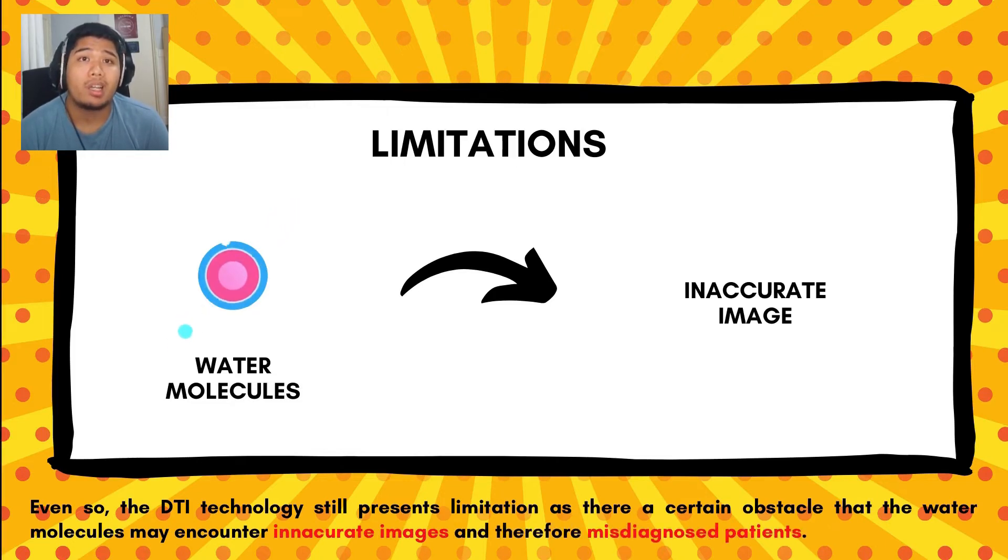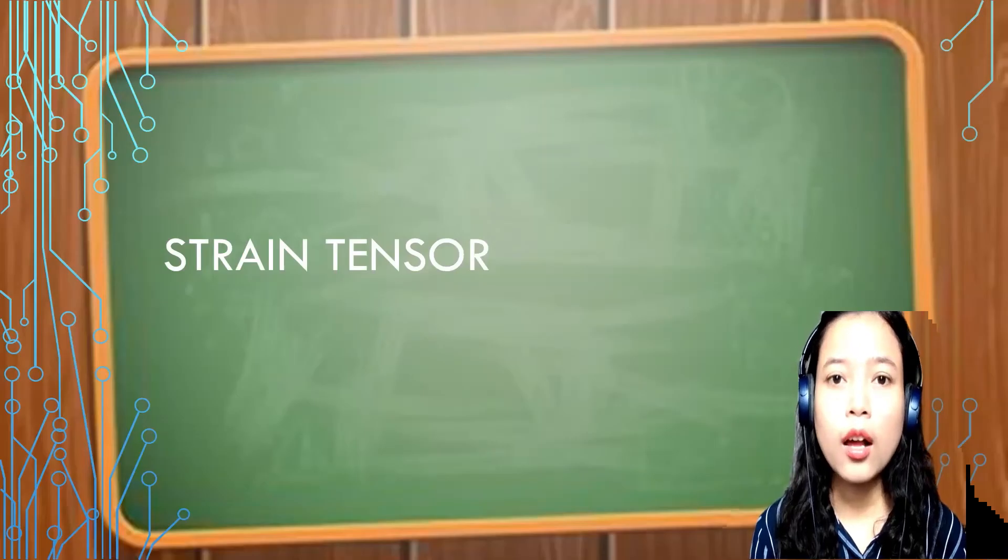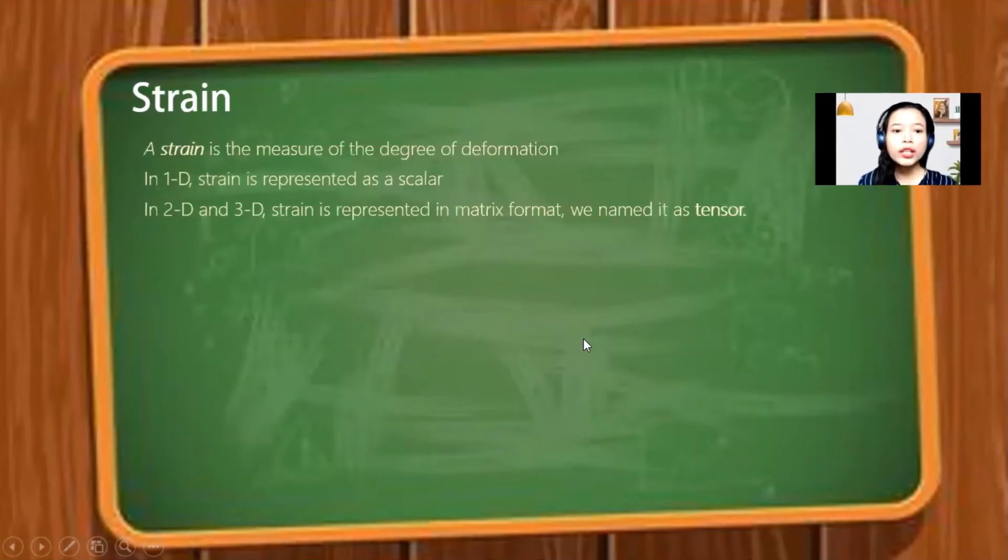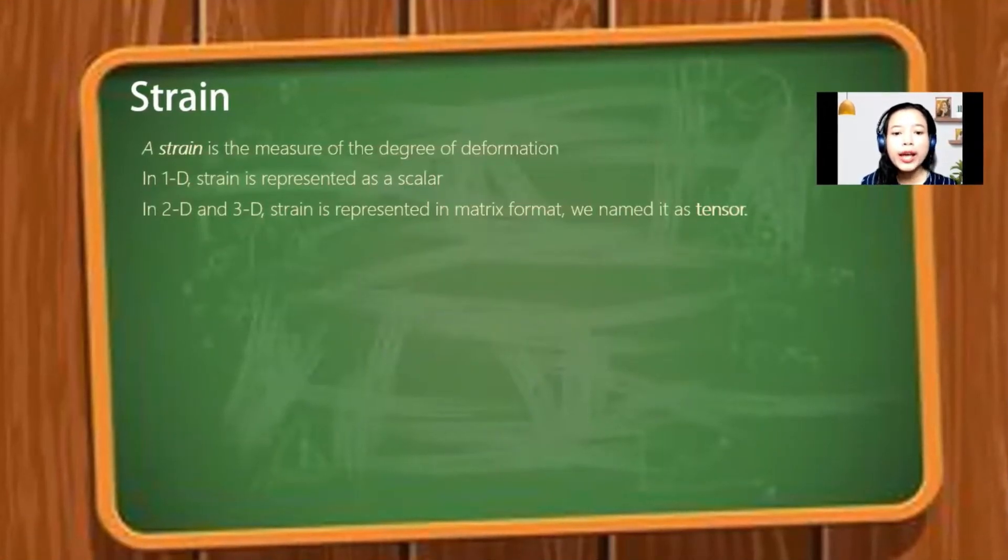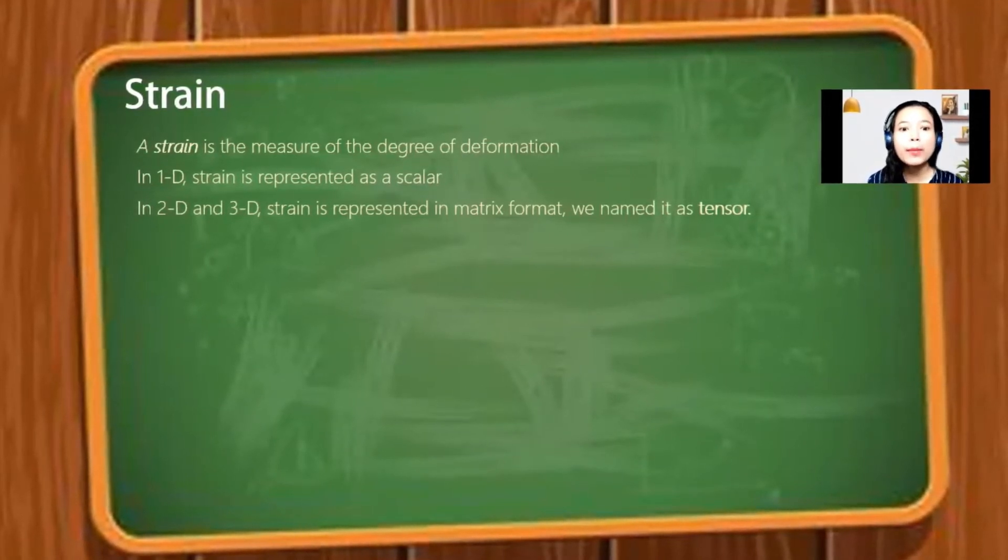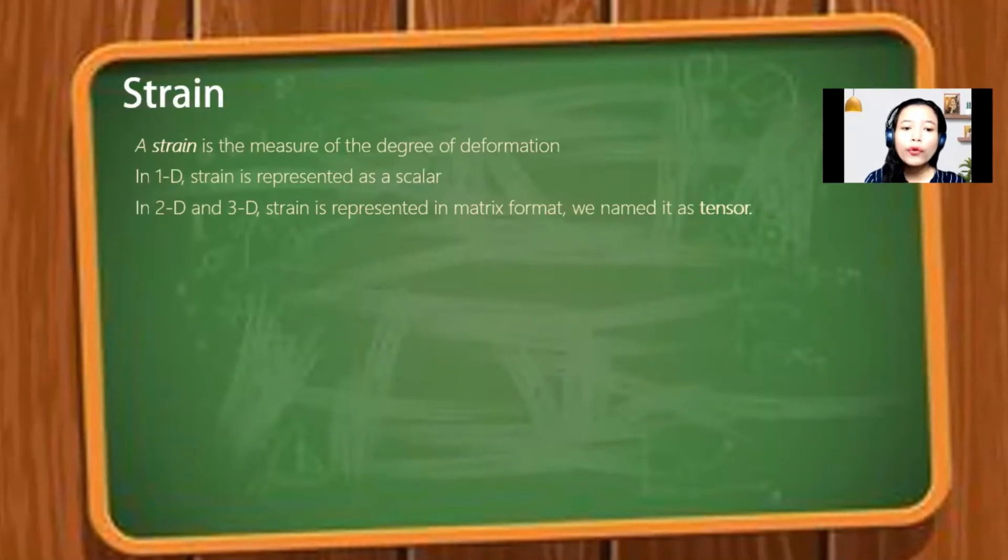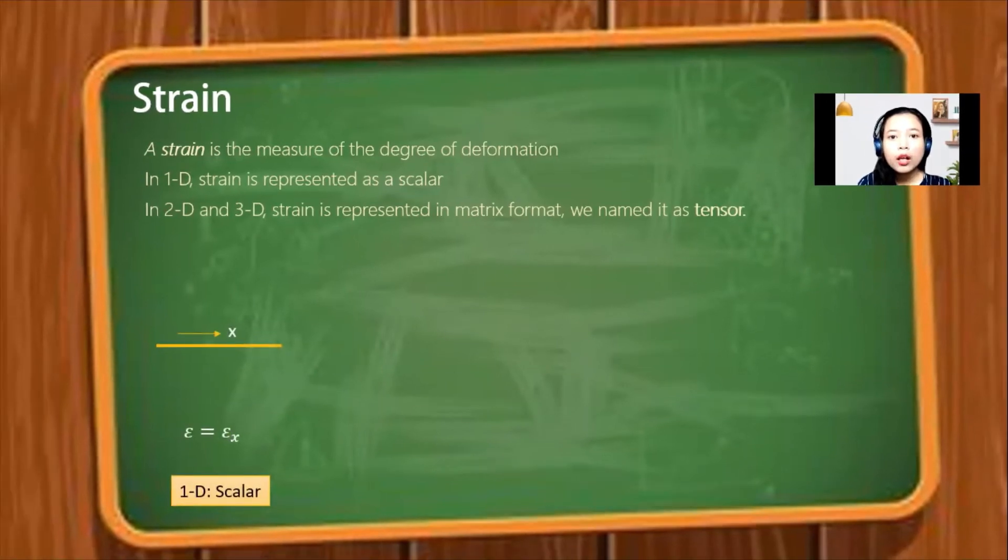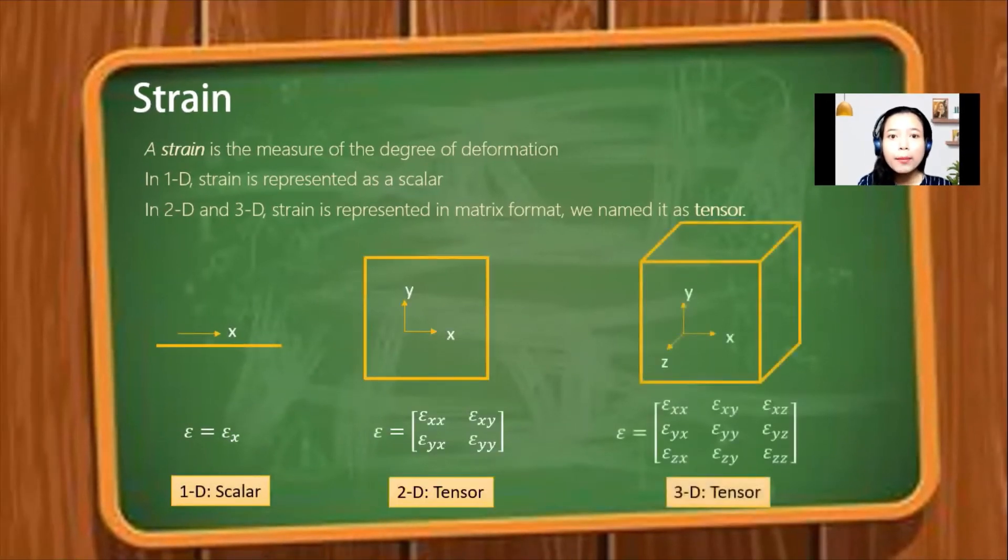Okay, now I would like to present one of the applications of tensor in mechanics, that is to represent strain. Strain is the amount of deformation experienced by the body in the direction of force applied, divided by the initial dimensions of the body. For one-dimensional problems, strain is represented by a scalar quantity. Meanwhile, for two and three-dimensional problems, strain is represented as a matrix and we call it a tensor.